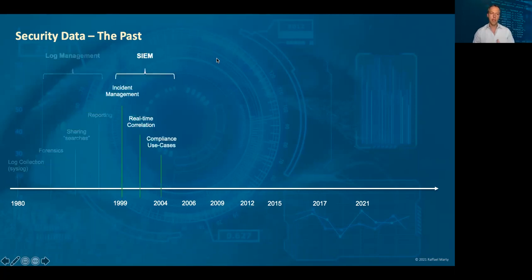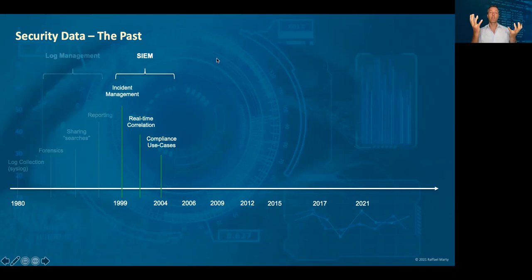At about 1999, around the century border, we started getting into the SIM space — back then it was not the SIEM space but actually the SIM space. Really what started it was that we had intrusion detection systems with a lot of alerts coming from them, and we needed to weed out all the false positives. The way to do that at the time was really matching up those IDS alerts with vulnerabilities of systems. The theory was: if the system is not vulnerable to a certain attack, it's probably a false positive. That was really the birth of the SIM space, which expanded quickly into incident management.